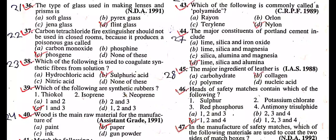Question: Carbon tetrachloride fire extinguisher should not be used in closed rooms because it produces a poisonous gas called? Answer is phosgene.